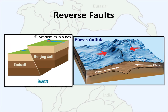Reverse faults are due to compressional forces in the crust — the hanging wall moves up relative to the foot wall. In some cases reverse faults are associated with mountain formation and convergent plate boundaries. These fault types will produce severe earthquakes because they are due to compressional force.